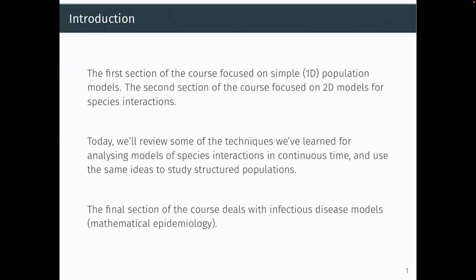The first section of the course looked at simple one-dimensional population models — a homogeneous population with very simple population growth models. We then moved on to species interactions, focusing on competition between species for different resources, and consumer-resource models: predator and prey, host and parasite, plants and herbivores — asymmetric interactions between a victim and an exploiter. We spent quite a bit of time on predator-prey models. Infectious disease models are essentially consumer-resource models as well, but with a few special properties.